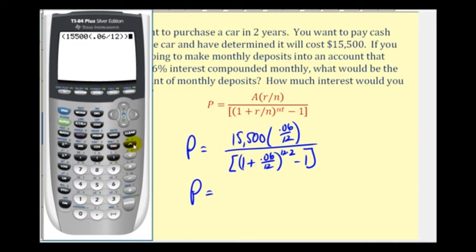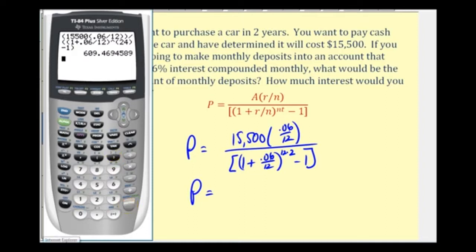There's our numerator. Our exponent here is going to be 12 times two, which is 24. And there's our denominator. So now if we only save for two years, we have to save $609.47 per month, which will obviously be a lot more difficult to do.